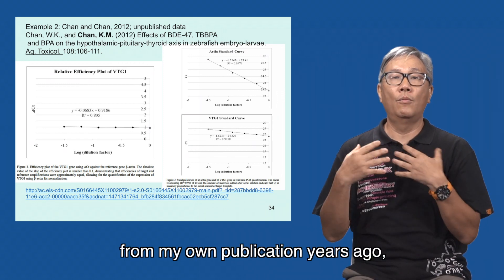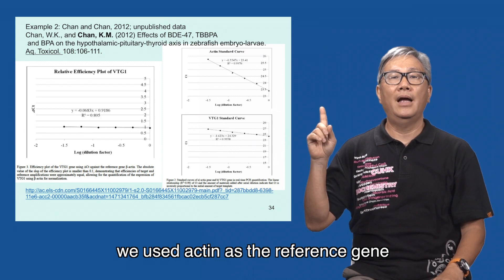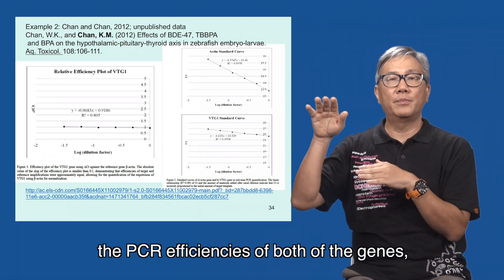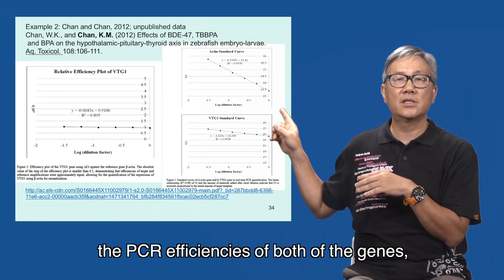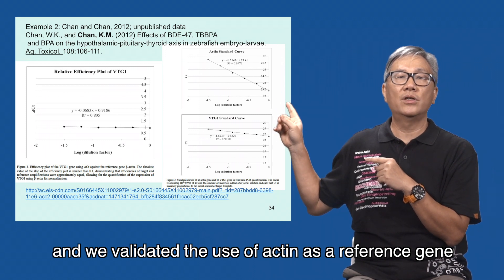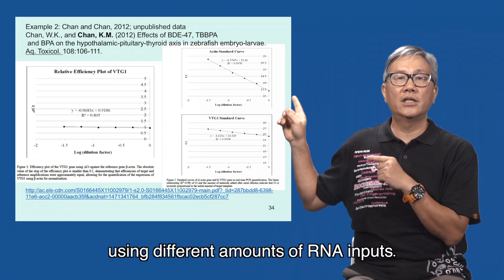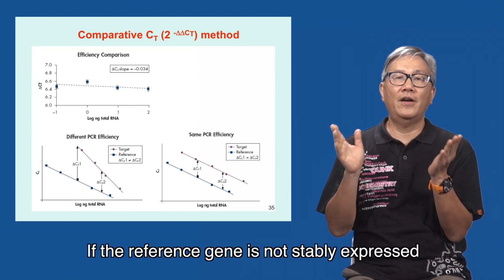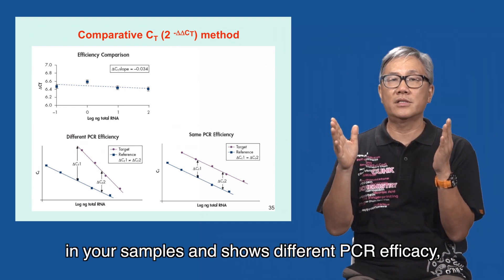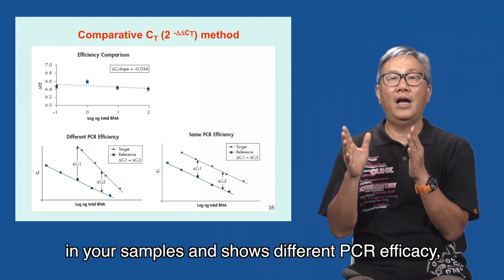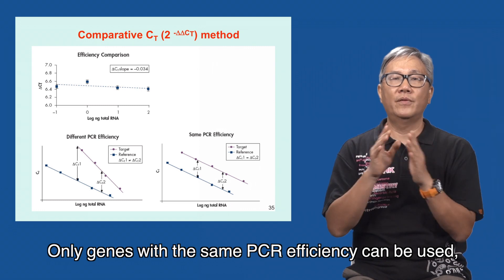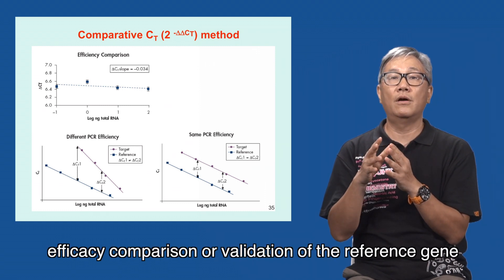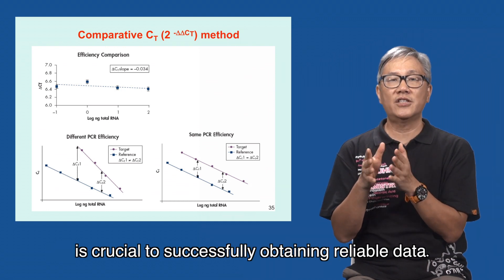In another example from my own publication, we used actin as the reference gene to study the expression of a gene called metallogenin VTG1. We needed to determine the PCR efficiency of both genes and we validated the use of actin as a reference gene in the delta-delta-CT method with the relative efficiency plot using different amounts of RNA inputs. If the reference gene is not stably expressed in your samples and shows varying PCR efficiency, it cannot be used as a reference gene. Only genes with the same PCR efficiency can be used, and in the comparative CT method, validation of the reference gene is crucial to successfully obtaining reliable data.